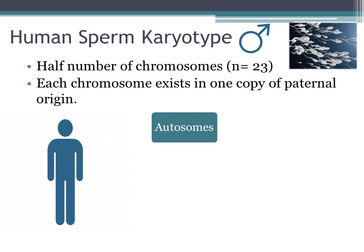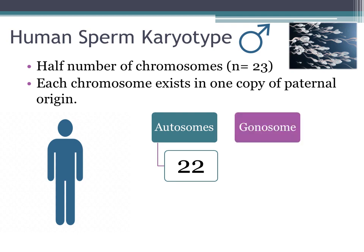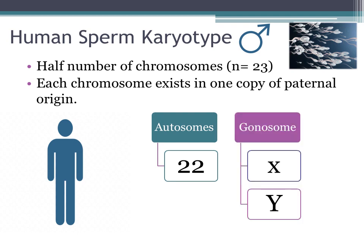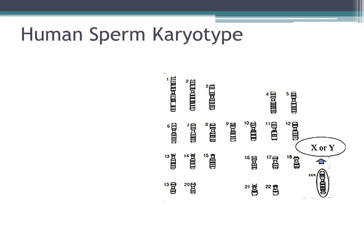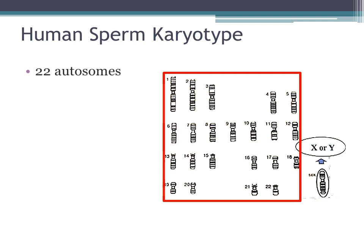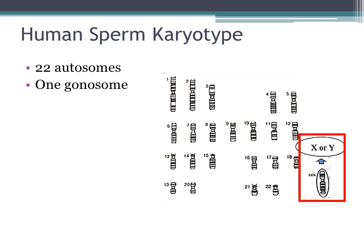A human sperm karyotype consists of 22 autosomes and only one gonosome, which can be either X or Y. Here in the slide, you can notice that the karyotype consists of 22 autosomes and only one gonosome, and each chromosome exists only in one copy, which is of paternal origin.